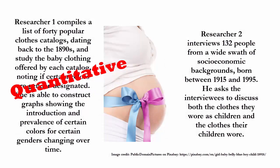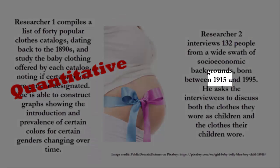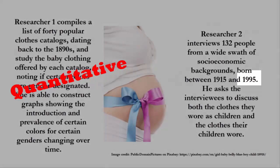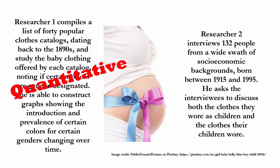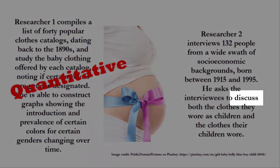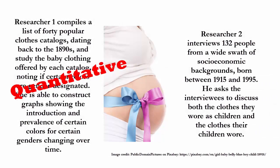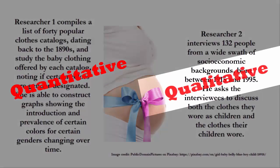You might have looked at the numbers in researcher number two's method — 132, 1915, 1995 — and concluded that you were looking at quantitative data there as well. However, those numbers are false friends. Look at the end where it says 'discuss' — that's a good clue that you're working with qualitative data. It also seems unreasonable to assume that researcher number two expects the interviewees to remember every single piece of clothing they wore as children. He can't construct an exhaustive list of those items the way researcher number one can with the catalogs. It seems most reasonable to conclude that he's asking for this information in a more informal, anecdotal context, and he's presenting the results in a narrative format, making this method definitely qualitative.